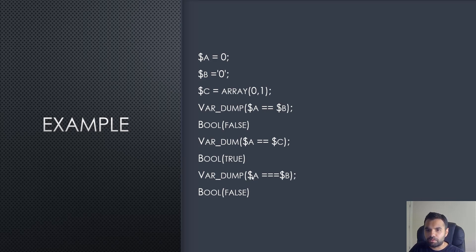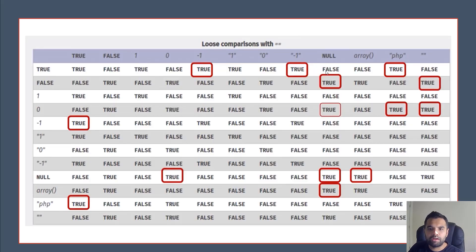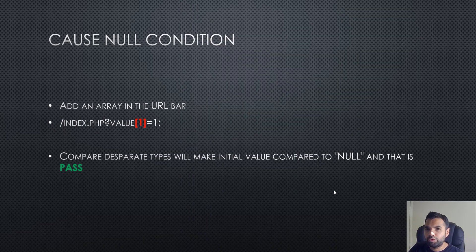If you compare b with c, it holds false — so there's definitely some weirdness there that you should try out yourself. The best way to bypass checks or authentication in an application is to cause a null condition. If you cause the PHP application to return a null value in a comparison, comparing null with false is true, comparing with zero is true, null to null is true, and null to array is true.